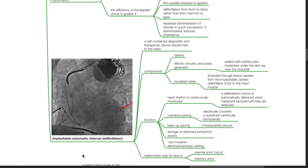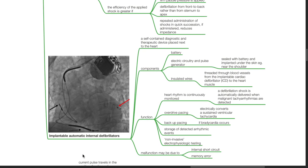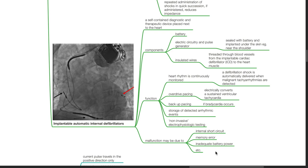Implantable automatic internal defibrillators are self-contained diagnostic and therapeutic devices placed next to the heart. Components include battery, electric circuitry and pulse generators sealed and implanted under the skin near the shoulder, and insulated wires threaded through blood vessels to the heart muscle. Functions of ICDs include continuous heart rhythm monitoring, automatic defibrillation shock delivery when malignant tachyarrhythmias are detected, overdrive pacing to convert sustained ventricular tachycardia, backup pacing if bradycardia occurs, storage of detected arrhythmic events, and non-invasive electrophysiologic testing. Malfunction may be due to internal short circuit, memory error, inadequate battery power, etc.